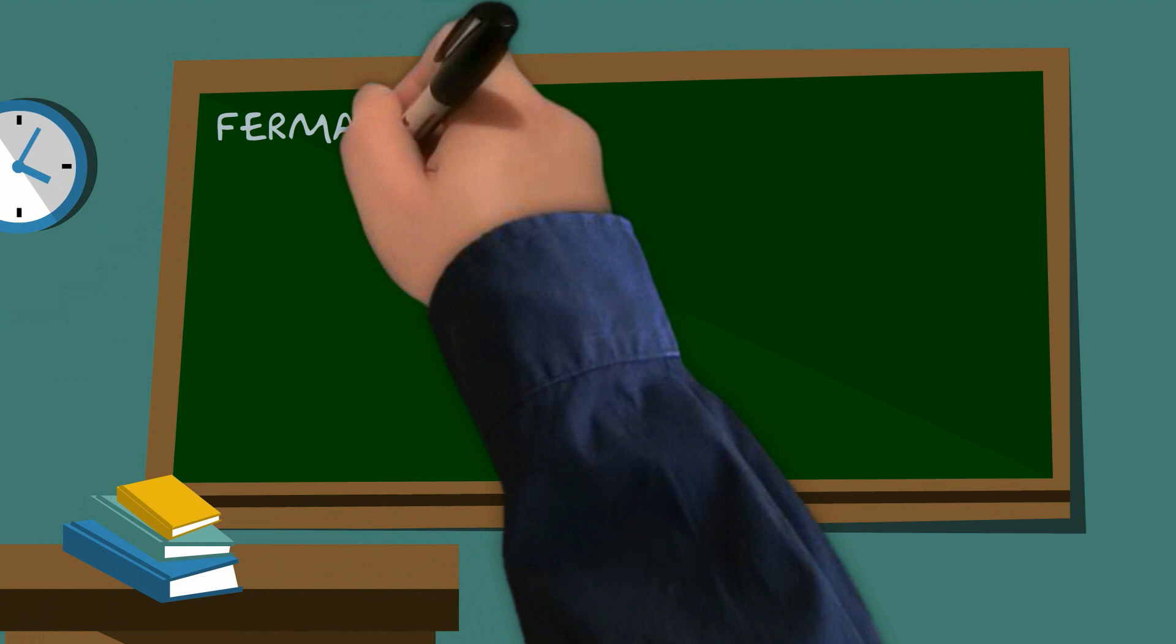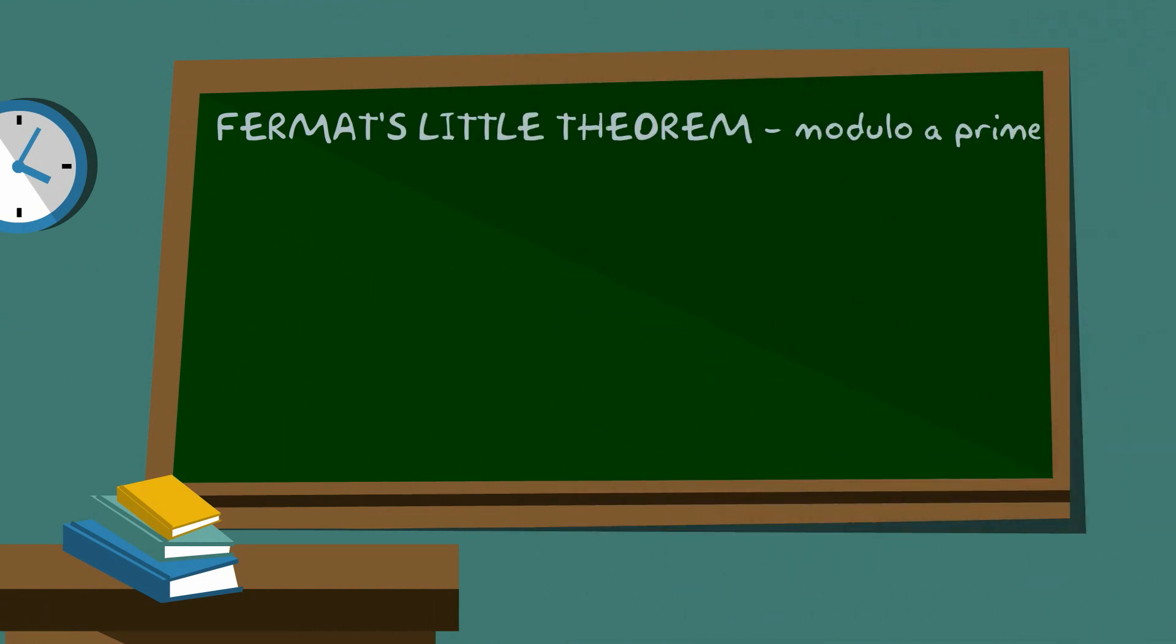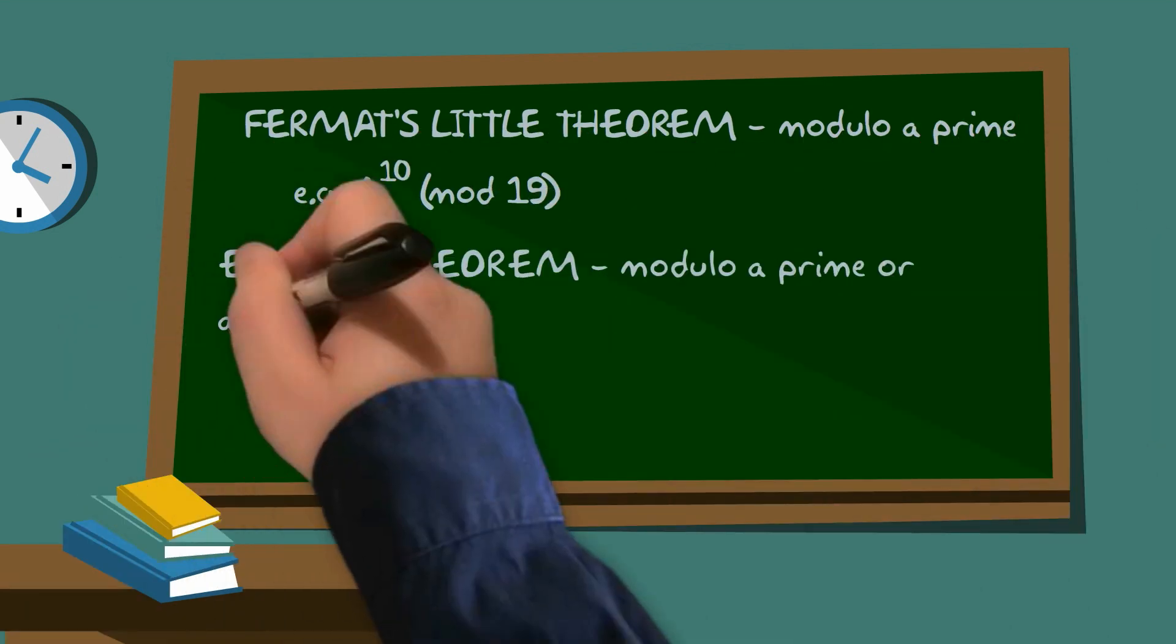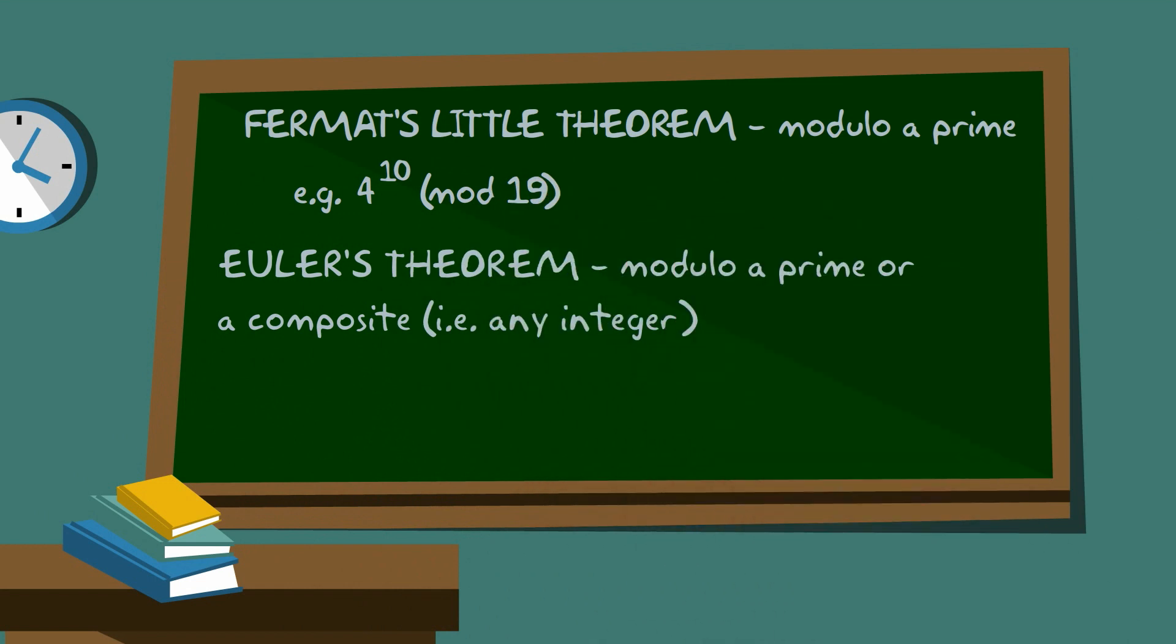Now, Fermat's Little Theorem concerns itself with modular arithmetic where everything is done modulo p prime. And it turns out that there aren't that many questions that you can be asked about Fermat's Little Theorem. However, the generalisation where we deal modulo prime or modulo a composite number is very, very important.